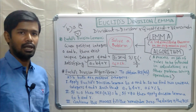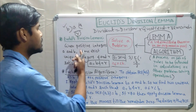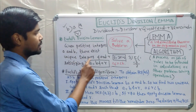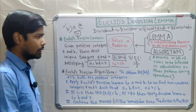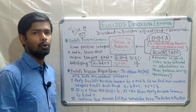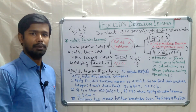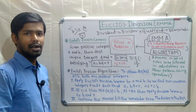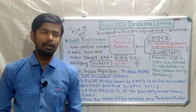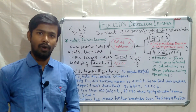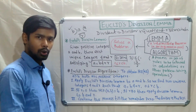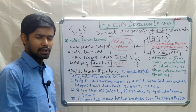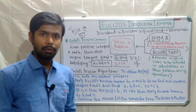The formal statement: given any two positive integers a and b, there exist unique integers q and r satisfying a = bq + r, where 0 ≤ r < b. Euclid's division lemma is simply the relation: dividend = divisor × quotient + remainder, where remainder must be ≥ 0 and less than the divisor.